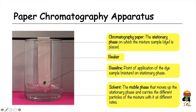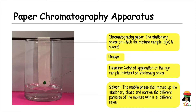The sample of the dye mixture or ink is placed as a dot in the center of the baseline. The chromatography strip is then inserted into a suitable solvent within a container such as a beaker. The solvent is called the mobile phase because it moves up the stationary phase, carrying the different pigment molecules at different rates.